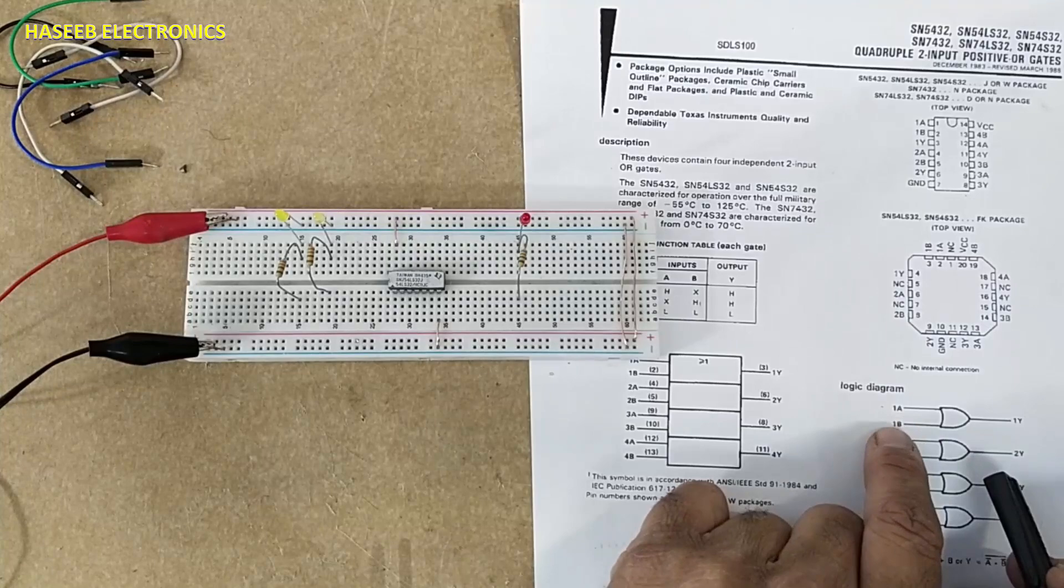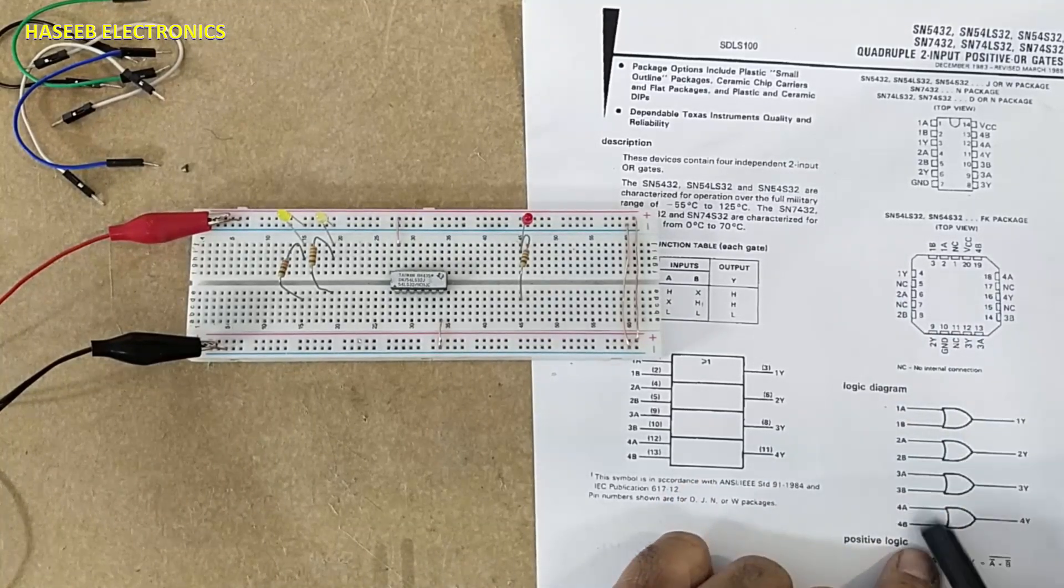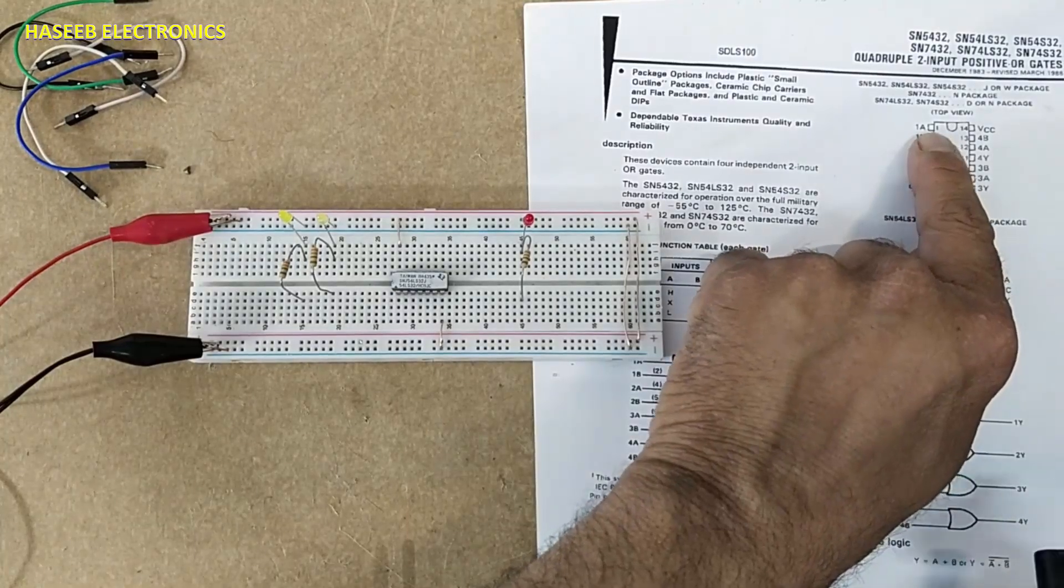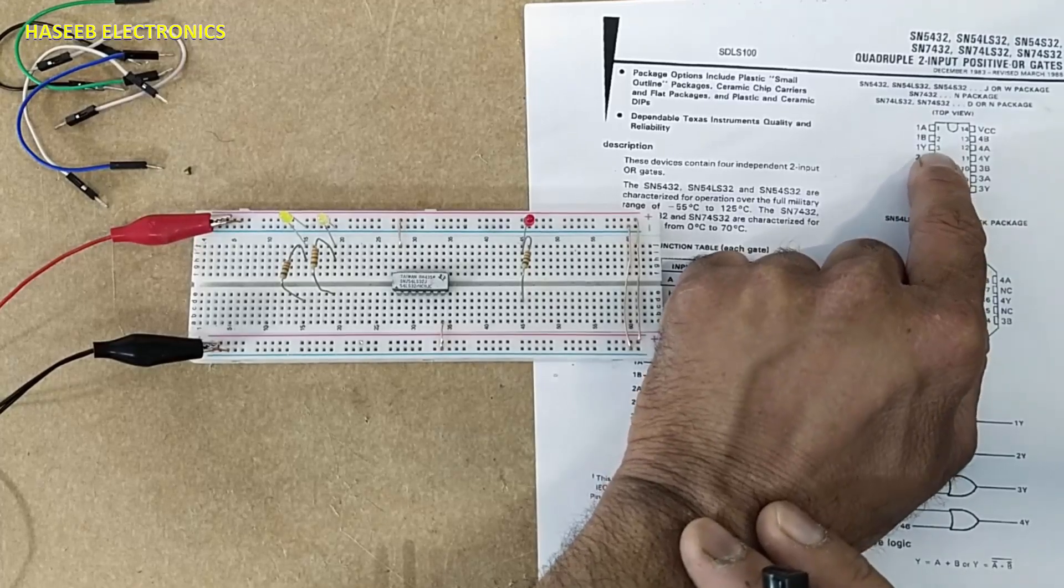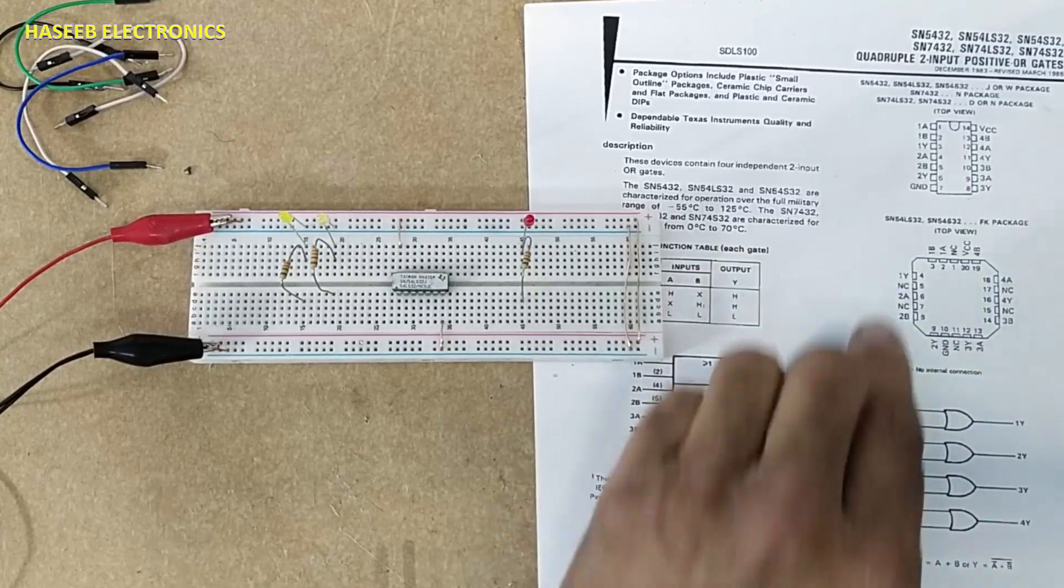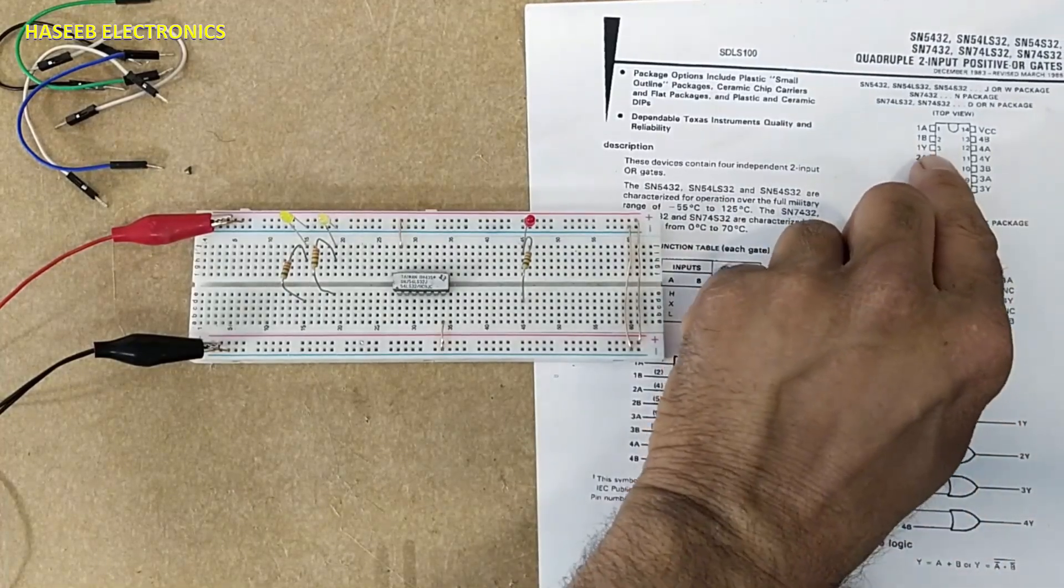Symbol is here, two input one output, four gates in one IC. Pin one is 1A, pin two 1B, pin three 1Y. A and B are input, Y is output. So this is one gate.